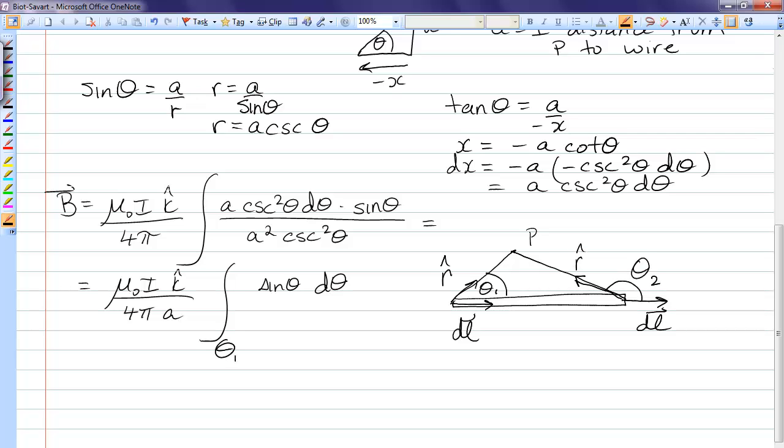Our limits of integration are from theta one to theta two. So we carry out that integration. The integral of sine is negative cosine.